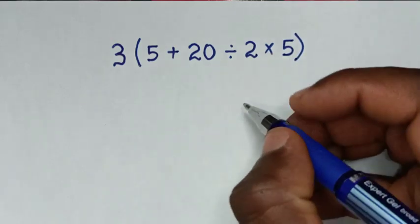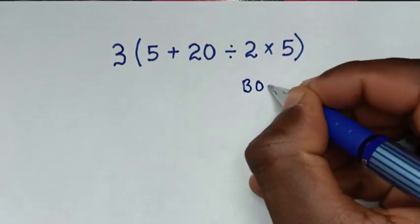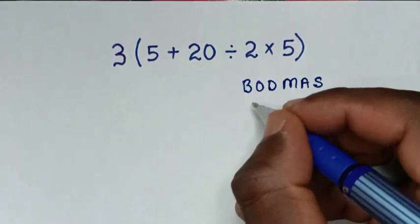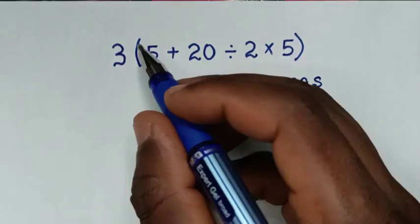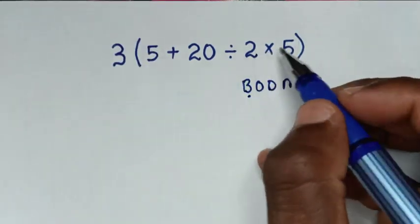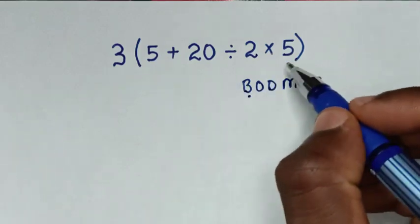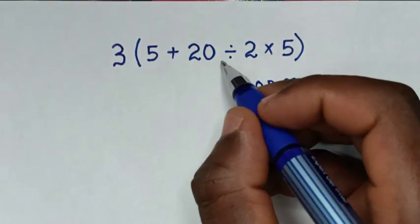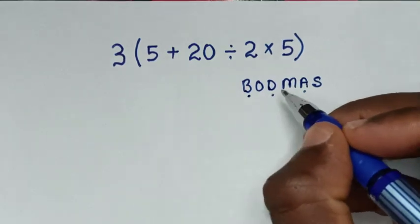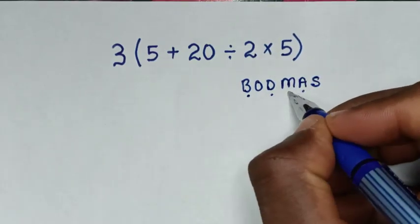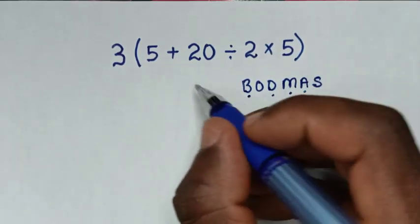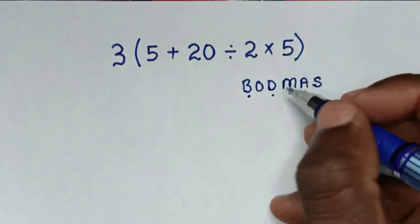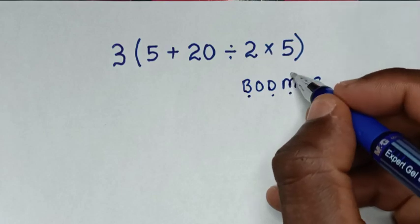From the BODMAS rule, B stands for Bracket. In this problem we have a bracket, and inside the bracket we have operations: addition, division, and multiplication. We'll handle the operations inside the bracket according to the rule.